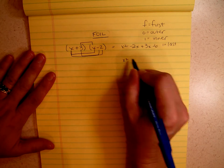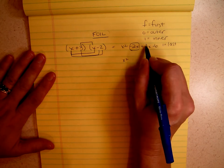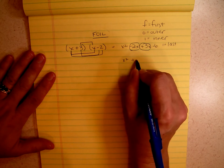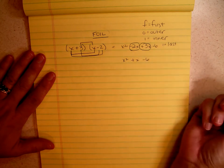So when I simplify that and put like terms together, negative 2x and positive 3x are like terms, so that becomes x squared plus x minus 6. Very good, right?